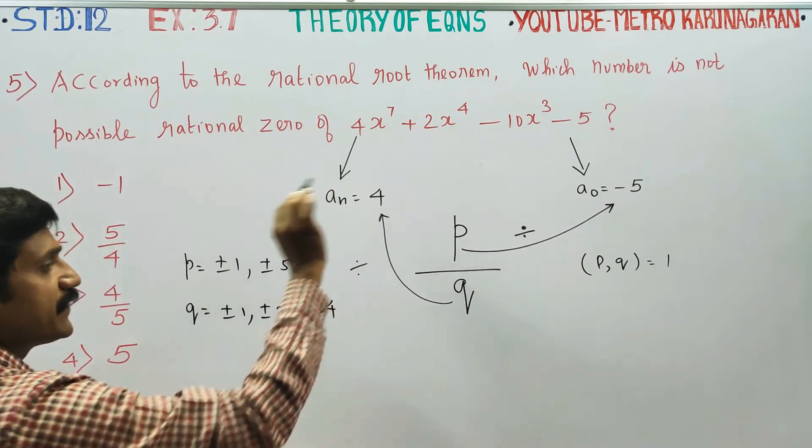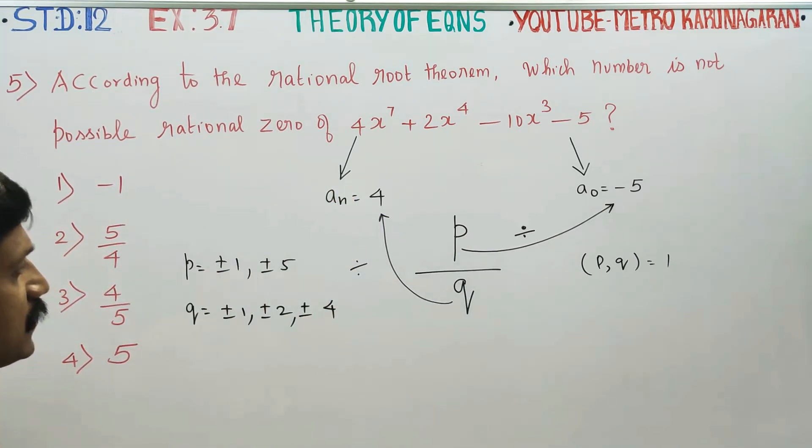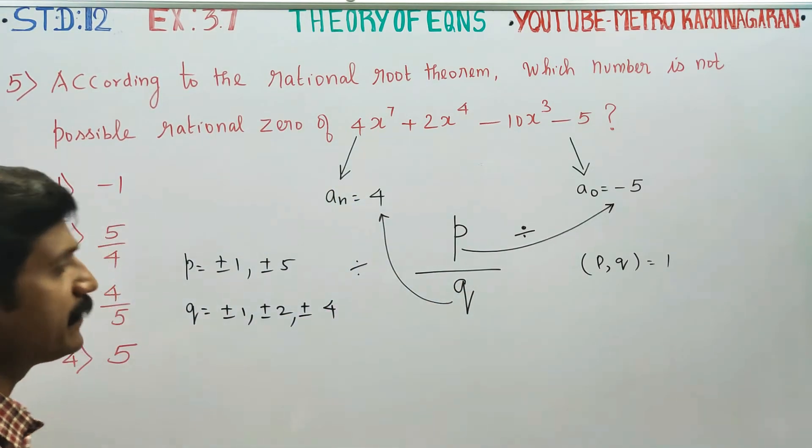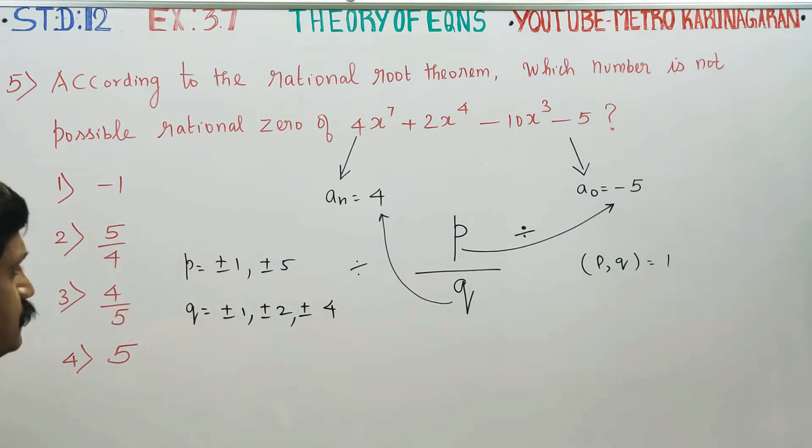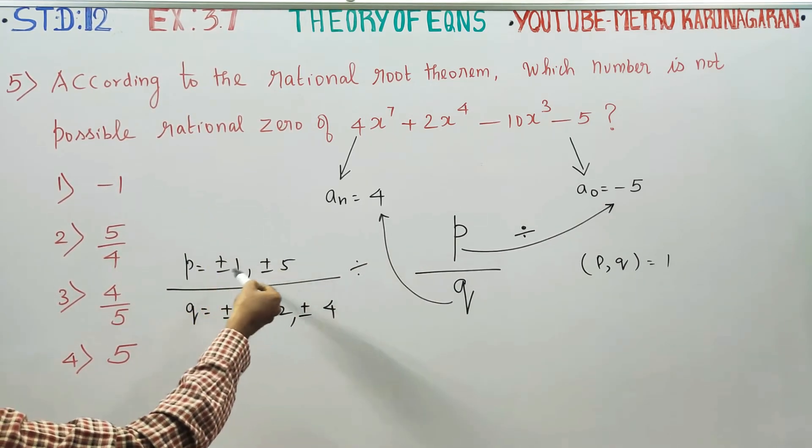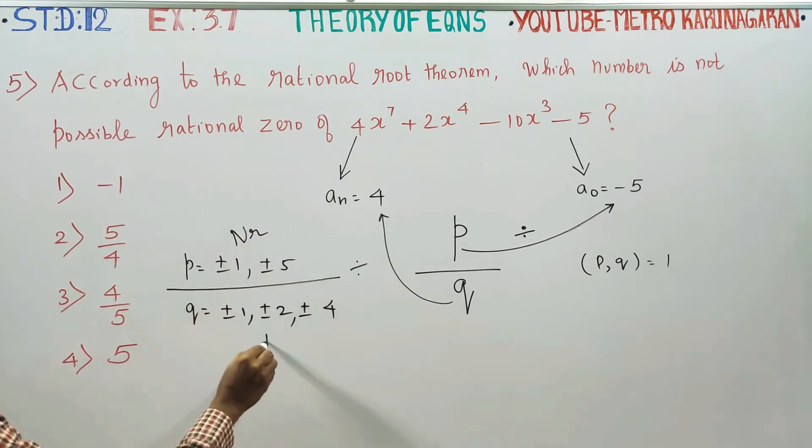Therefore, your answers will be p by q. This by this: 1 by 1, or minus 1 by 1 - any number you can choose as numerator. This is my numerator and this is my denominator.